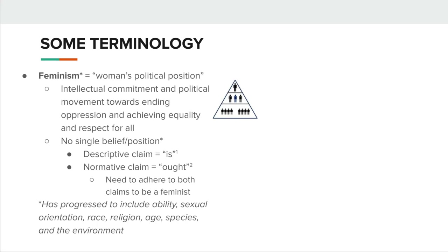You might notice that we talk about nature as if it were feminine, and we also tend to objectify it the same way. When you hear about the history of so-called discovering new lands, the land itself is often described the way a man might describe a woman's body — something to be explored and uncovered, something that has secrets that the explorer is somehow meant to unfold.